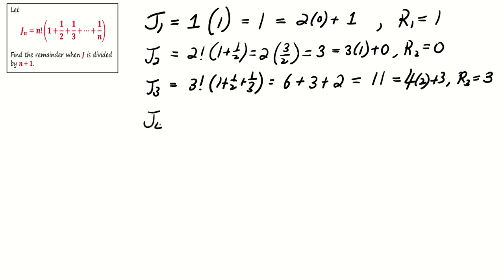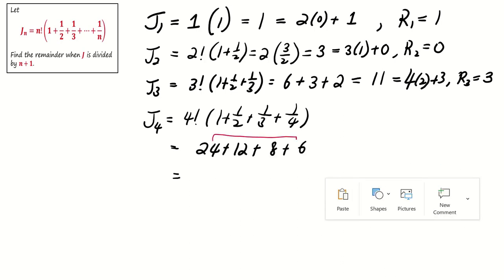But now, let's be patient and consider J4. Its value is 24 plus 12 plus 8 plus 6. If we pair 24 and 6, and 12 with 8, we get 30 and 20. Each of these pairs is divisible by 5.